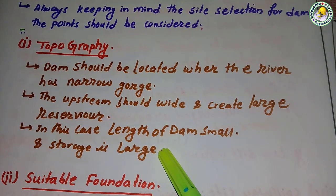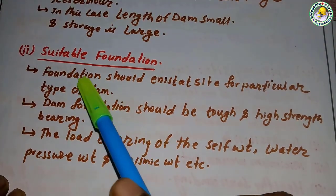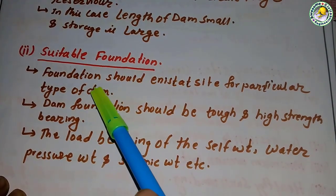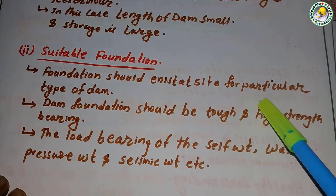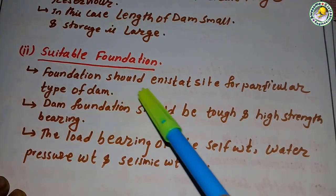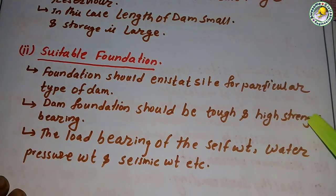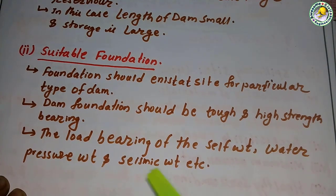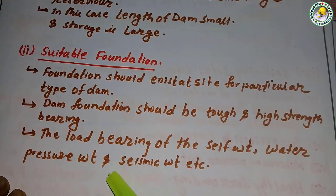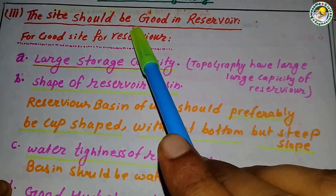Number two — the dam site is selected according to a suitable foundation. A foundation should exist at the site for the particular type of dam. The dam foundation should be tough and of high strength, capable of bearing the load of the self-weight, water pressure, wind, and seismic weight, etc.